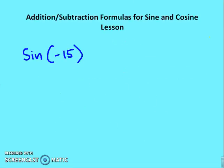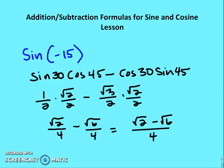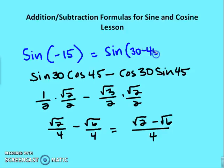Another example: sine of negative 15°. Sine(−15°) equals sine(30° − 45°). Using the subtraction formula: sine 30° · cosine 45° − cosine 30° · sine 45° = (1/2)(√2/2) − (√3/2)(√2/2) = (√2 − √6)/4.